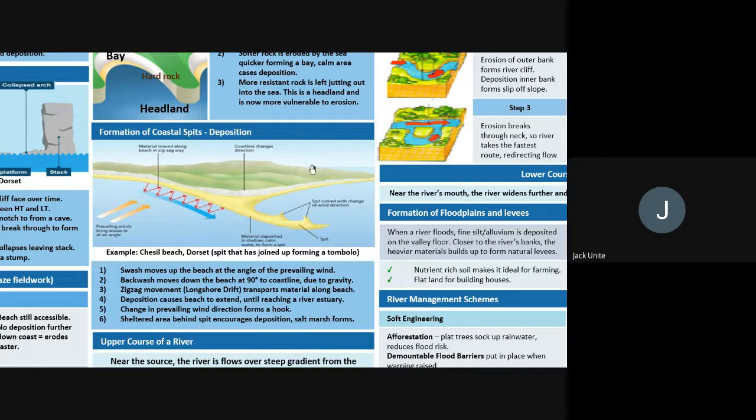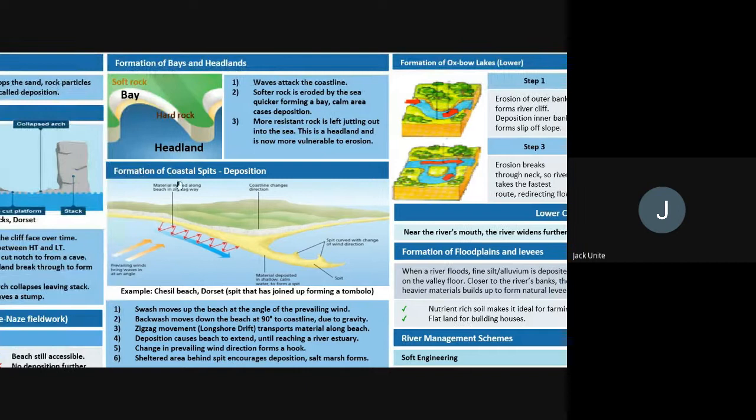Other features such as a tombolo are worth looking up. Key terminology to use in exams: prevailing winds are the direction from which winds usually flow. Use terms like swash and backwash in your answers. A spit is a great example of a deposition feature.